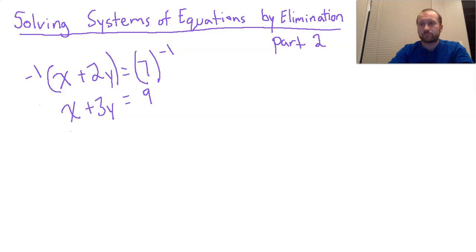You might think about how you would do that, and we'll certainly get into that. What I like to do when I multiply is rewrite the equation below here. So I'm going to write negative x, because negative 1 times x is negative x. Negative 1 times 2y is negative 2y. And on the other side, negative 1 times 7 is negative 7.